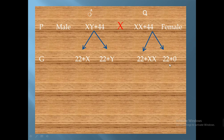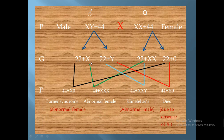Here are the results of fertilization between these abnormal gametes. If the sperm containing 22 plus X fertilizes the abnormal ovum containing 22 plus 0 (no X chromosome), the result will be 44 plus X0 — a total of 45 chromosomes instead of the normal 46.